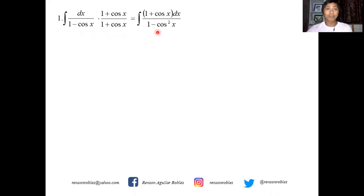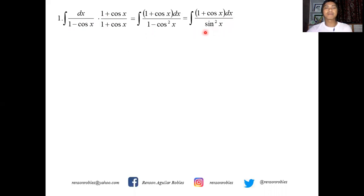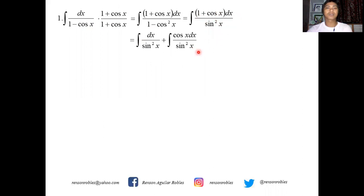By trigonometric identity, 1 minus cosine squared x equals sine squared x. So this integral becomes the integral of (1 plus cosine x) dx all over sine squared x, which we can split as the integral of dx over sine squared x plus cosine x dx over sine squared x.